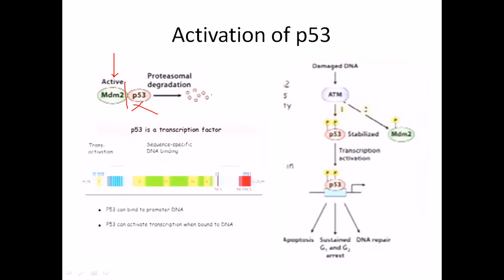When the cell senses any kind of damaging situation, it cleaves out MDM2 from p53, and we have active free p53. A question arises: why do this? The actual event is that we are continuously producing p53, and MDM2 is rapidly degrading it via the proteasome degradation system. So what we find inside the cell is MDM2, which rapidly degrades p53 using the proteasome complex.